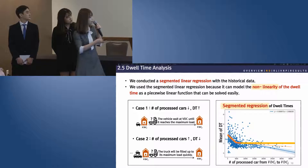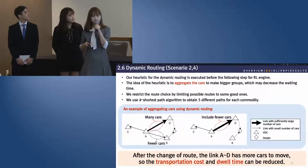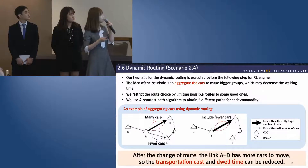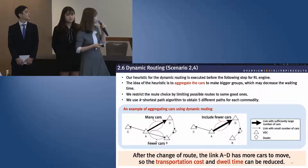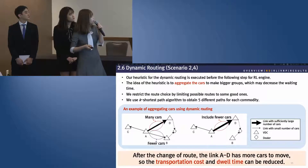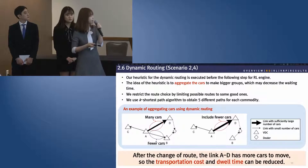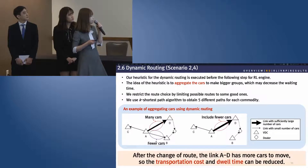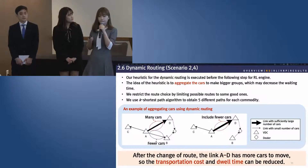The yellow line represents the two-day requirement of the minimum dwell time. For the dynamic routing case, we used a heuristic to determine which VDCs to send the cars to. The idea of the heuristic is to aggregate cars to make bigger groups. We may change the route of cars on link A and B to A and D if A and D are included in one dispatch. After the route change, transportation cost and dwell time can both be reduced. From now on, Yoo Kyung will be presenting.